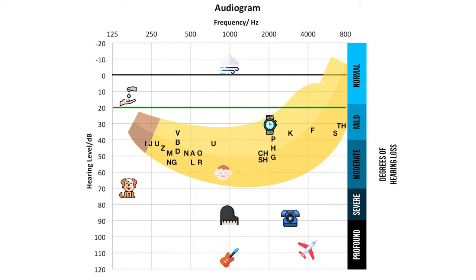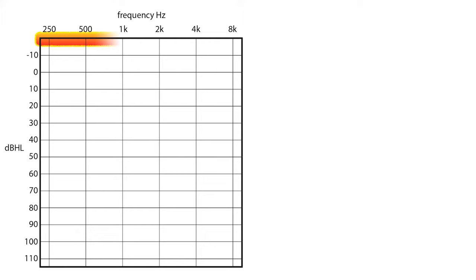This is a blank audiogram. Frequency is along the x-axis in hertz and the intensity is along the y-axis in decibels. Normal hearing for an adult is between 0 and 20 decibels across all frequencies. A key is provided on the right of the graph as symbols may vary.